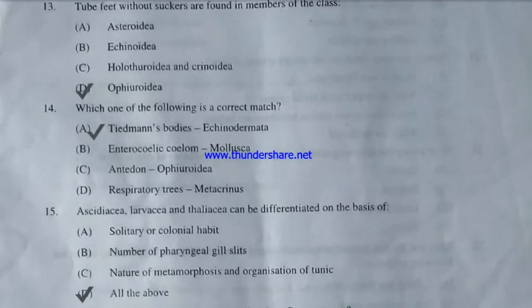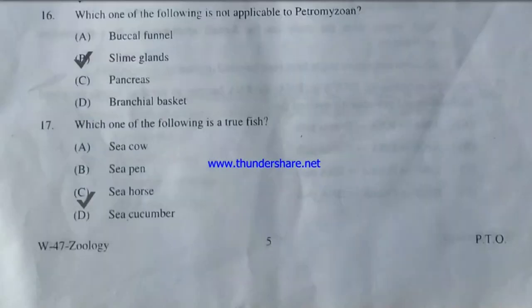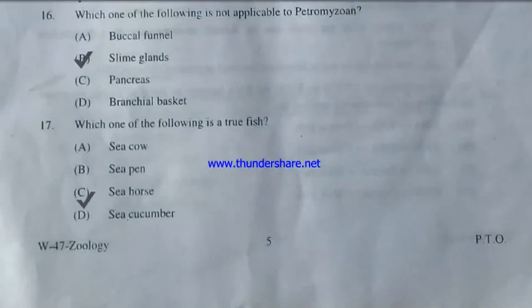Ascidiacea, Larvacea, and Thaliacea can be differentiated on the basis of solitary or colonial habit, number of pharyngeal gill slits, nature of metamorphosis, organization of tunic, or all of the above? The answer is all of the above. Which of the following is not applicable to Petromyzon — buccal funnel, slime glands, pancreas, or branchial basket? The answer is slime glands — slime glands are not applicable to Petromyzon.